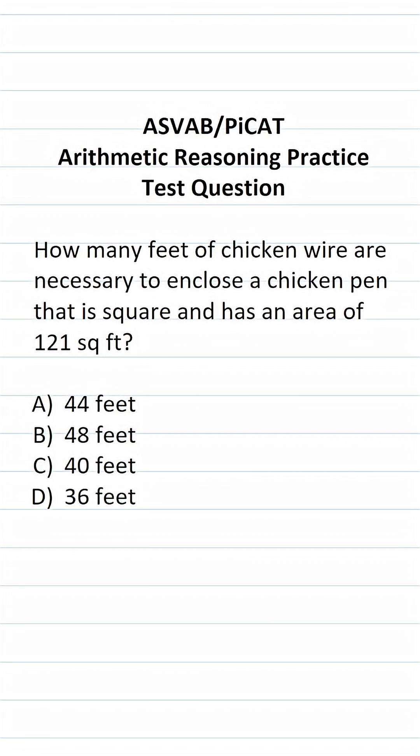This arithmetic reasoning practice test question for the ASVAB and PiCAT says, how many feet of chicken wire are necessary to enclose a chicken pen that is square and has an area of 121 square feet?